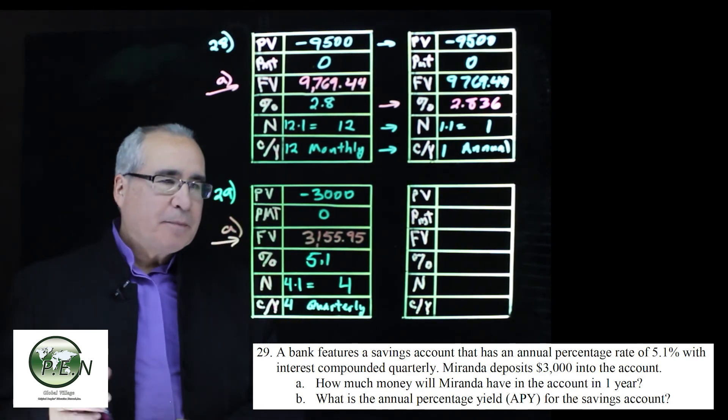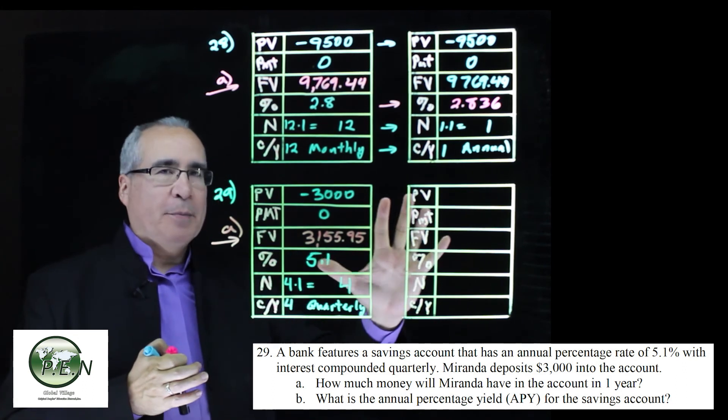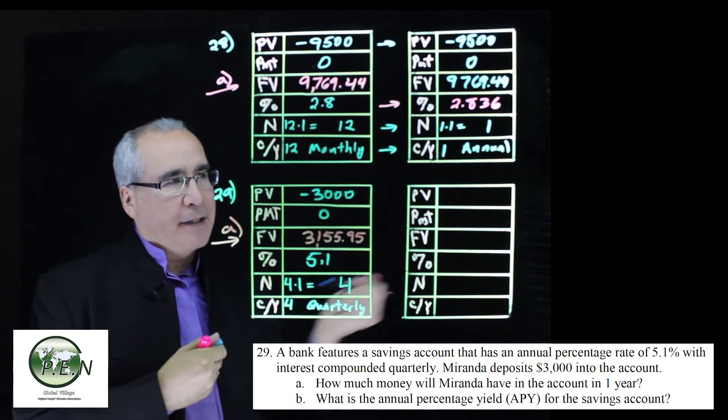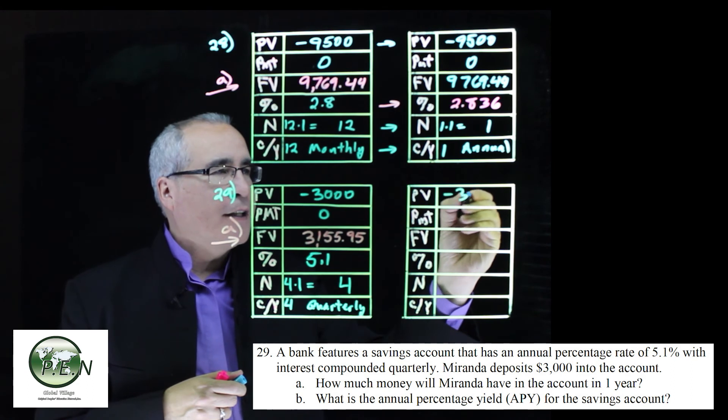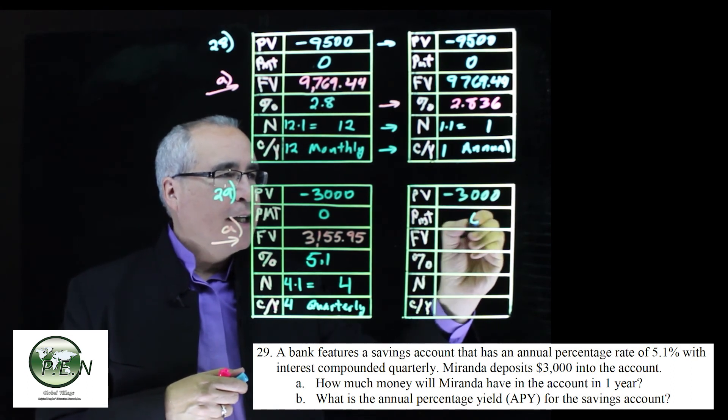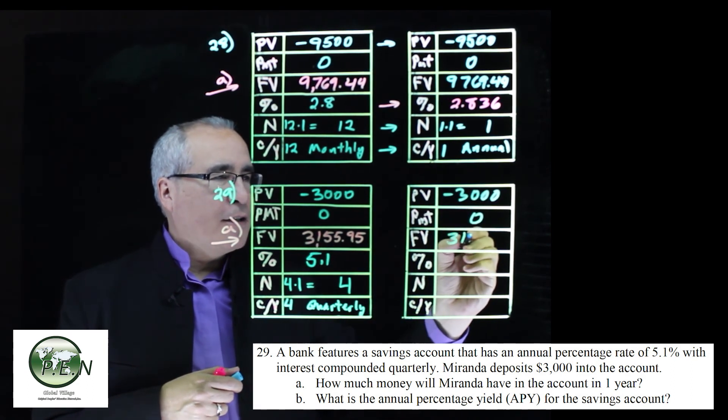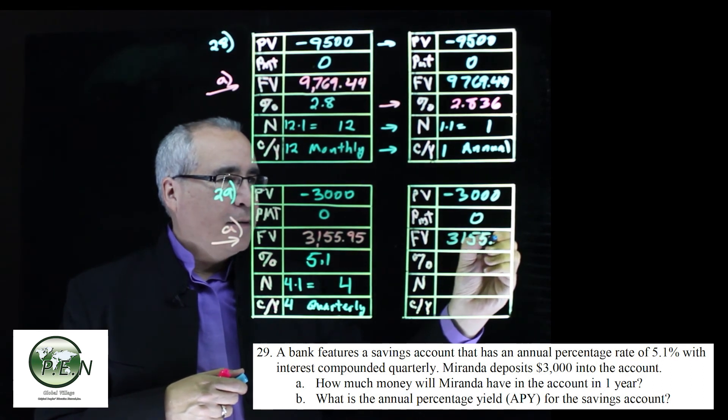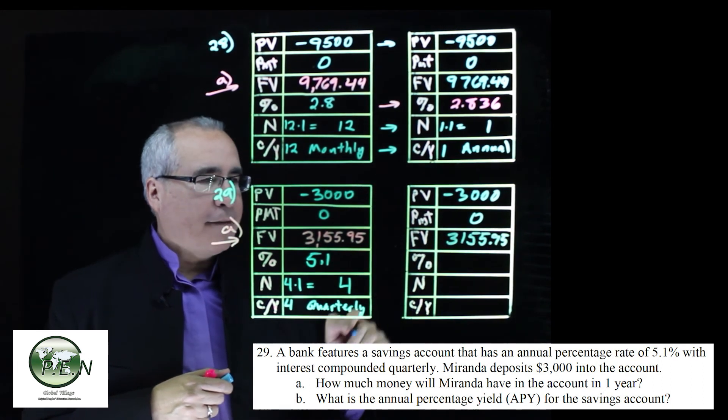For the B part, we just leave all this information in our calculator, so again, I'll copy it over here so you can see the difference. This does not change, this does not change, future value does not change, but we needed to calculate it to have it in there.